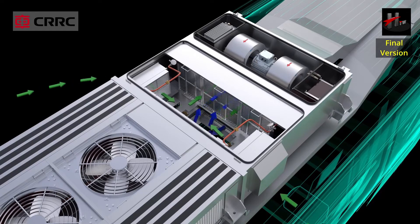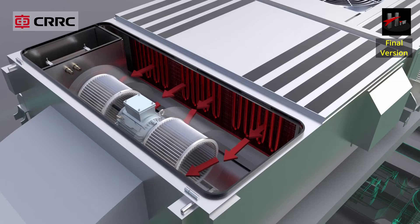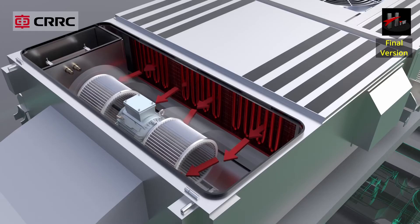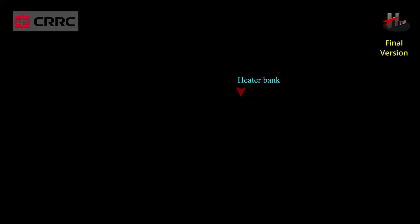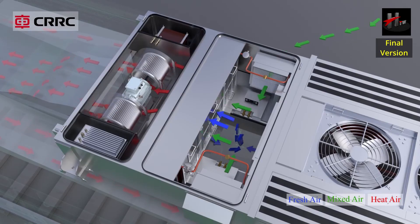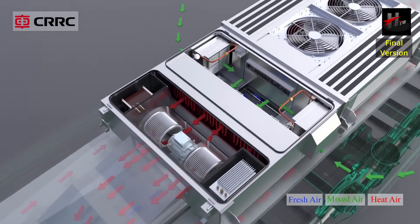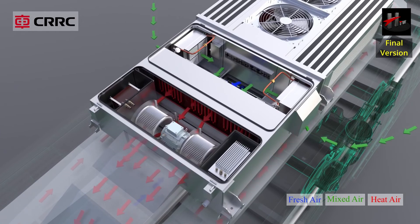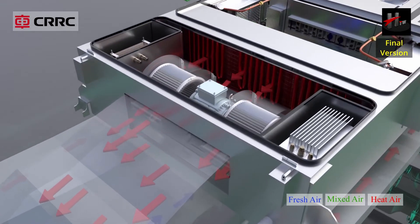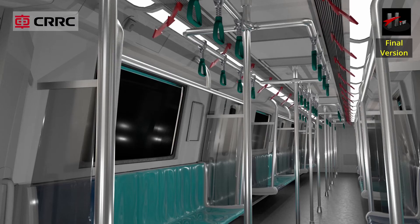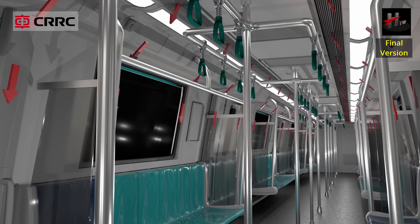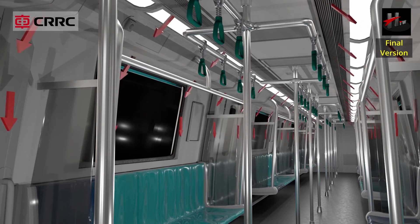From the mixed air chamber, the mixed air of ambient and return air passes through the mixed air filters and the heater bank. The heater bank heats the mixed air before it is supplied into the supply air duct through the supply air opening, and warm air is discharged into the saloon through the air diffusers located in the ceiling of the saloon car.